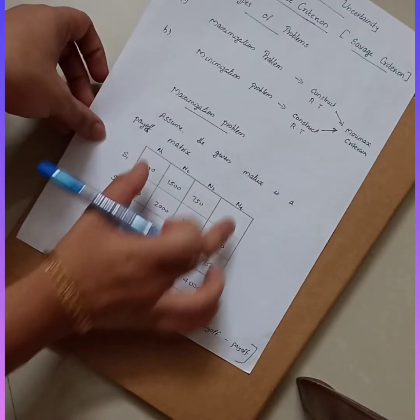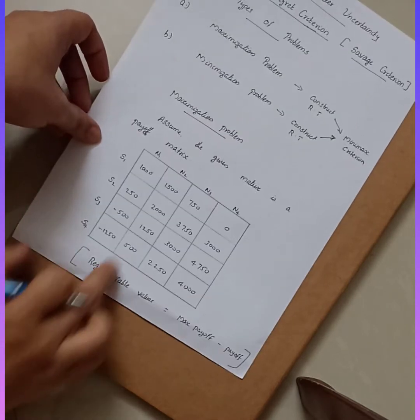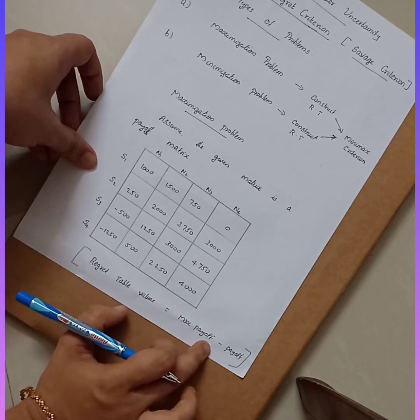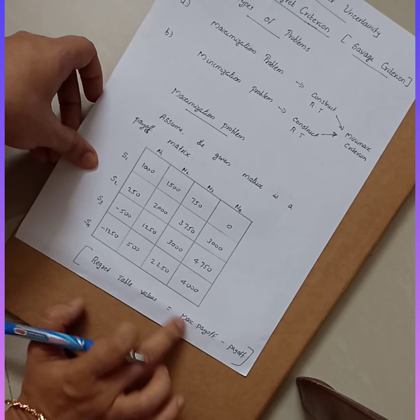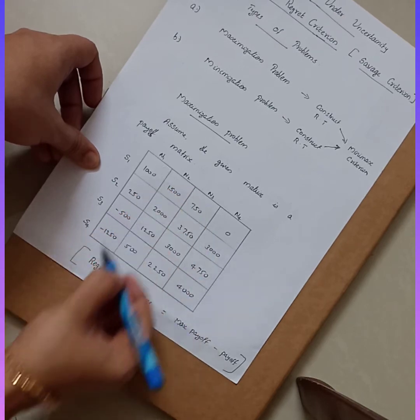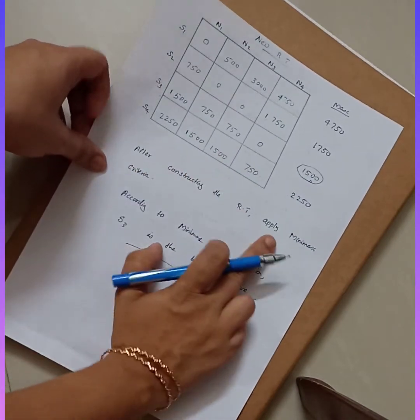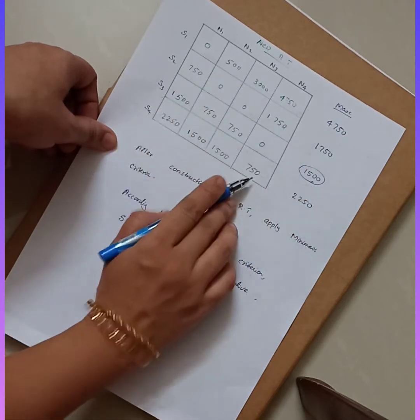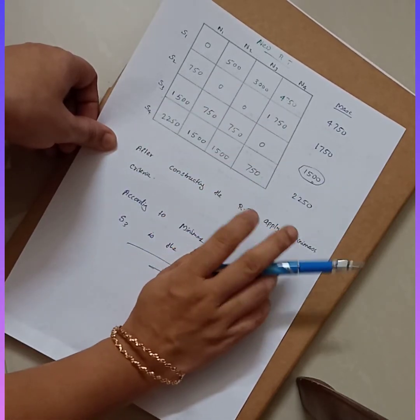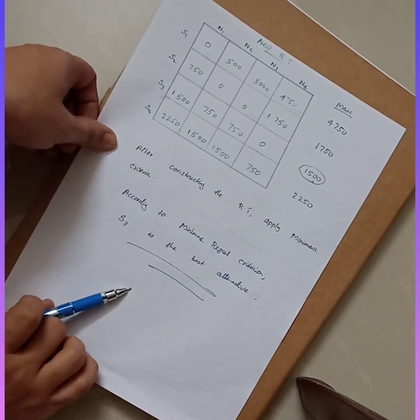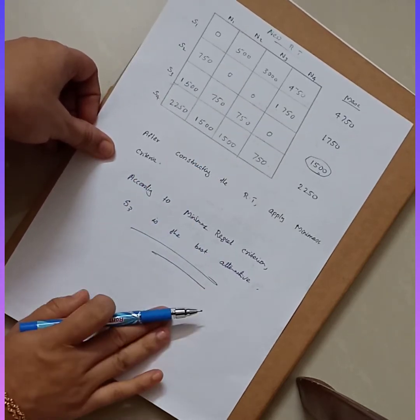To summarize the maximization problem: if it is a payoff matrix, it is a maximization problem. First, construct the regret table by taking the maximum payoff and subtracting each payoff from it — column by column. Once you have the regret table, apply the minimax criterion: take the maximum value of each row, then take the minimum of those values. The alternative corresponding to that minimum is the best alternative.